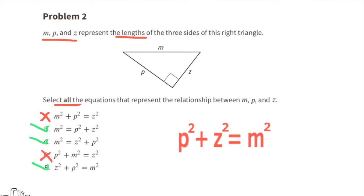Equation E works because z squared plus p squared equals m squared is equivalent to p squared plus z squared equals m squared. And equation F works because it's the same equation that we originally wrote.